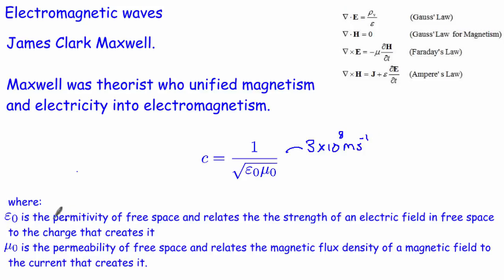Epsilon-zero relates the strength of an electric field to the charge that creates it, and mu-zero relates the magnetic flux density to the current creating the magnetic field. He found that these waves didn't just include light — he predicted a whole spectrum of electromagnetic waves.